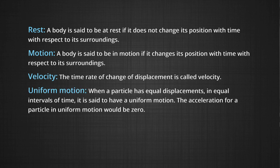Uniform motion: When a particle has equal displacements in equal intervals of time, howsoever small this time interval may be, it is said to have uniform motion. The acceleration for a particle in uniform motion would be zero.